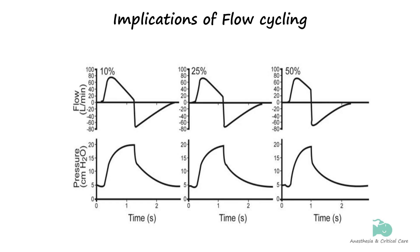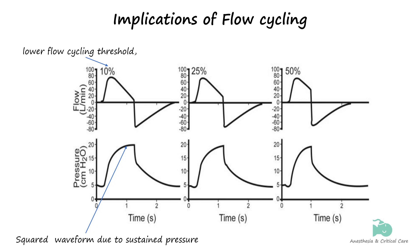Also, with a lower flow cycling threshold, the inspiratory pressure remains elevated for a more extended period as the flow takes longer to reach the threshold for cycling from the peak value. This results in a more sustained square waveform. Conversely, with a higher flow cycling setting, the inspiratory pressure declines more rapidly as it is easier for the flow to reach the higher cycling threshold, so less squaring is seen with higher cycling values.